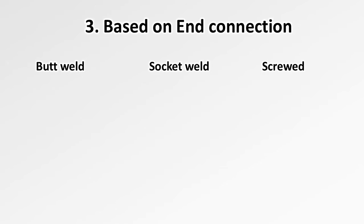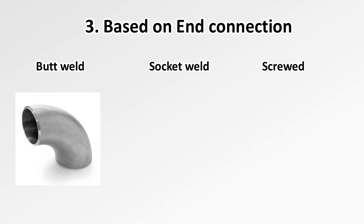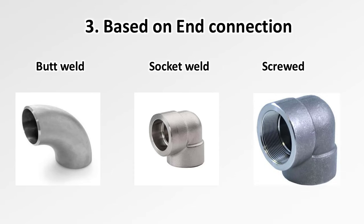Now let's see elbows based on end connections. We have butt weld connections, socket weld connections, and screwed end connections. Butt weld connection is a welding joint directly pipe to pipe. Socket weld connection has a socket inside the fitting where the pipe goes into the socket. And screwed end connection is a threaded connection.